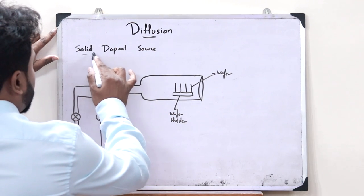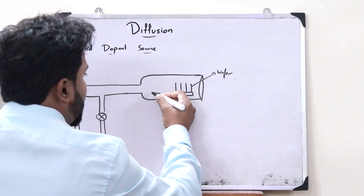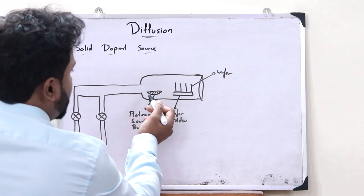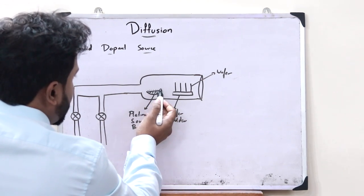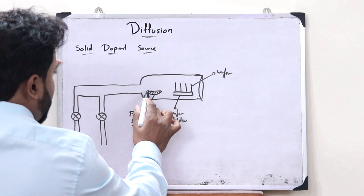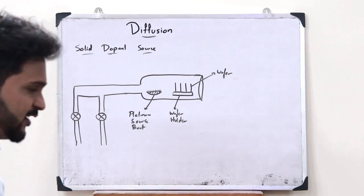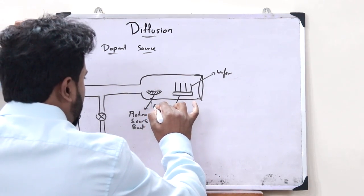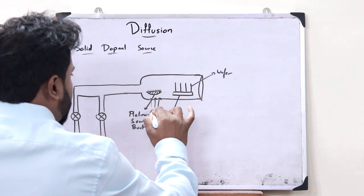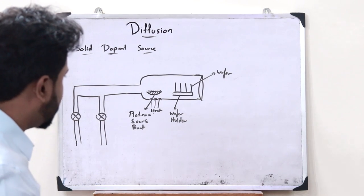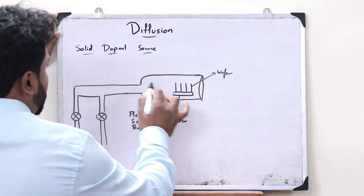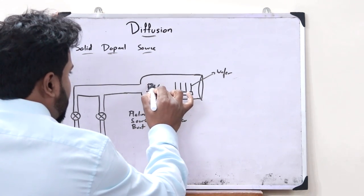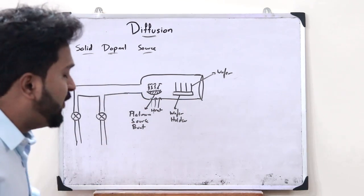On top of these particular wafers, we need to diffuse a particular solid dopant. So now we need the solid dopant source. For that, there is a particular platinum source boat like this, and it is on top of this particular platinum source boat that we keep the solid dopant source. What we do is we now start providing heat onto this particular platinum source boat. Once this is heated, this particular solid dopant source gets converted into vapor form.